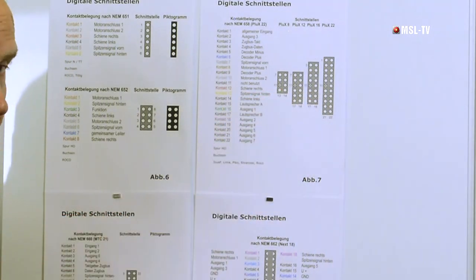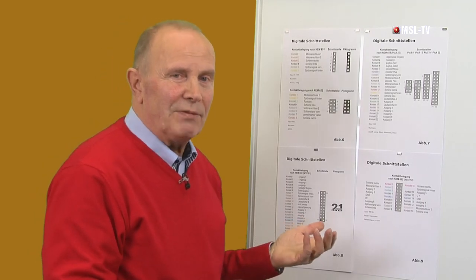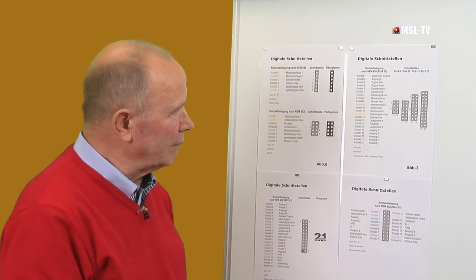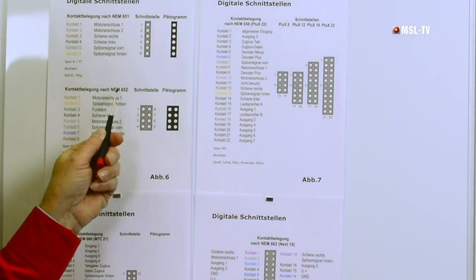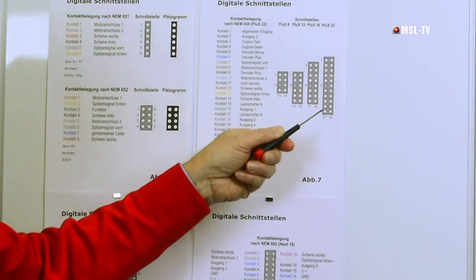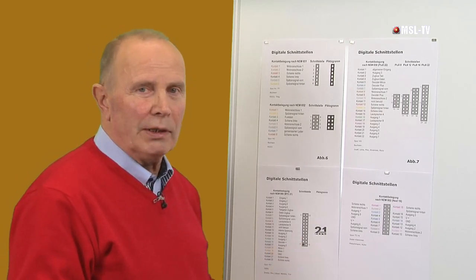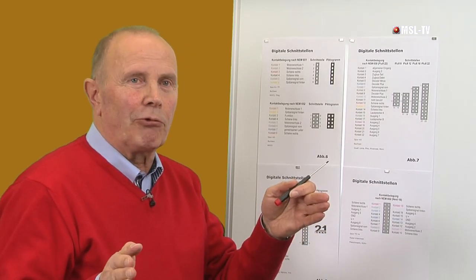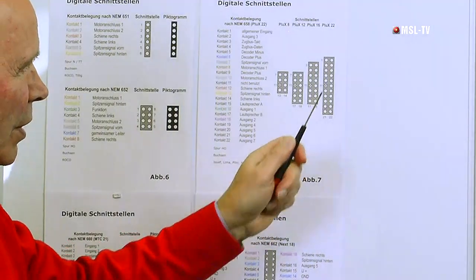Wozu brauchen wir 22 Pole? Das hat etwas mit der gewachsenen Funktionalität und dem gewachsenen Gebrauchswert zu tun. Es geht insbesondere um das Schalten von zusätzlichen Funktionen. Für den Sound selbst würde die 8-polige Schnittstelle nach NEM 652 völlig ausreichen. Aber der Kunde möchte heute mehr Funktionen haben, wie ein getakteter Rauchgenerator, Kupplungen, digitale Kupplungen, getrennt schaltbare Frontbeleuchtungen, Spitzenbeleuchtungen und so weiter.